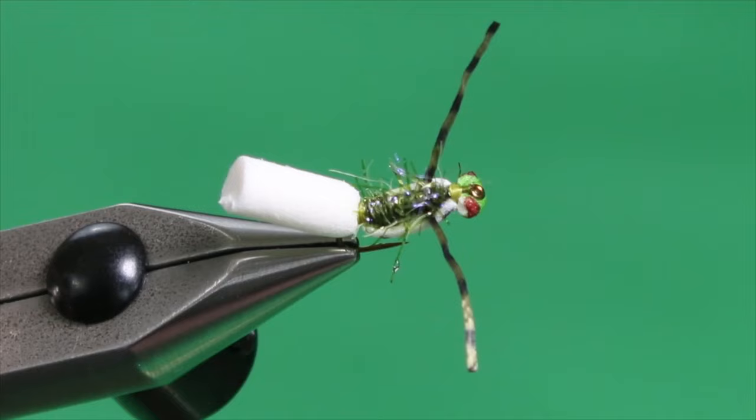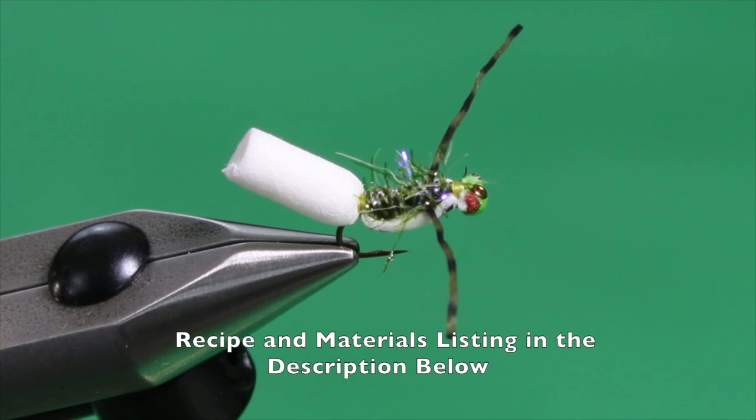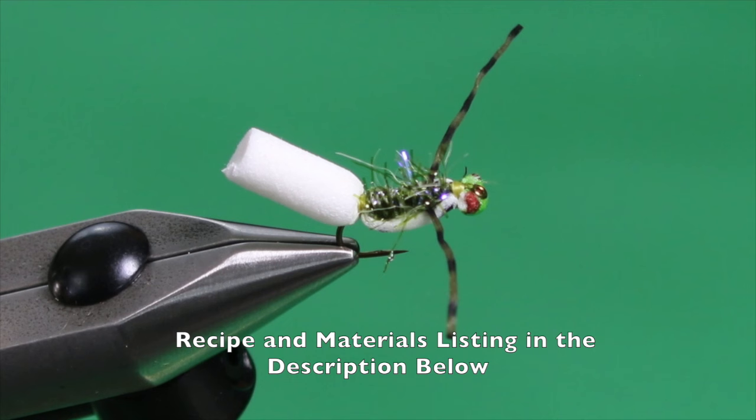But this fly works really good when the fish are targeting back swimmers as they're sitting just on the surface. All you see with this fly sticking out is the foam post. The rest of it is hanging down on a nice little 45 degree angle, just like the naturals. Give it a try. It works really well.